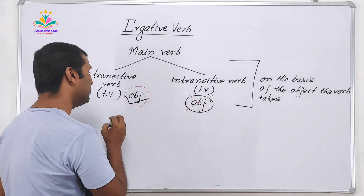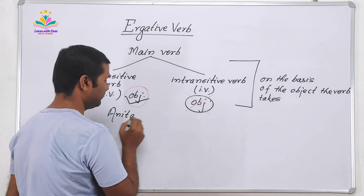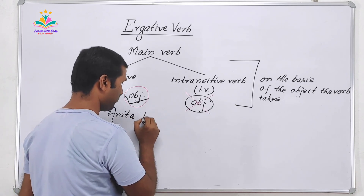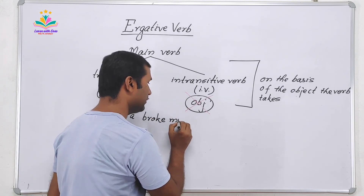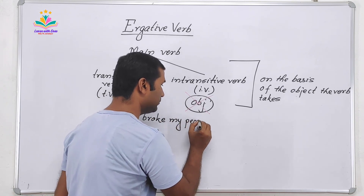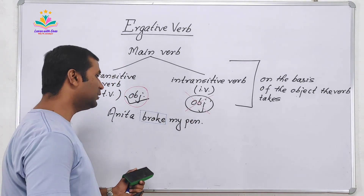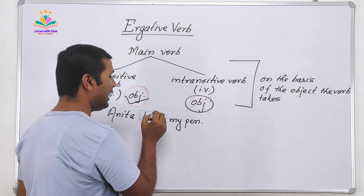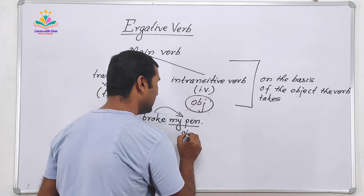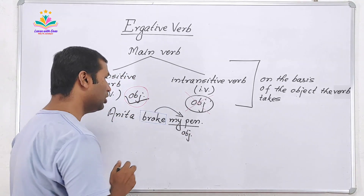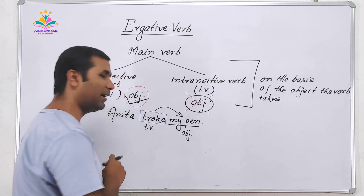Let's take an example. Look at that: 'broke my pen.' Now, this is the verb, and we know this verb has taken its object — 'my pen' is the object. So this verb is a transitive verb.